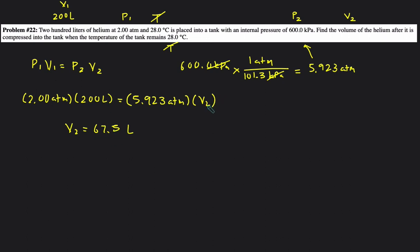Let's check if that matches our expectation. We can see that the pressure went from 2 ATM to 5.9. So the pressure went up which means that the volume should go down because it's an inverse relationship. And it did go down. It went from 200 and decreased from 200 to 67.5.